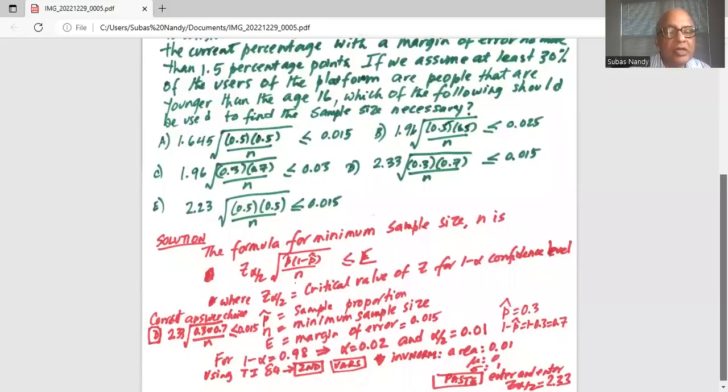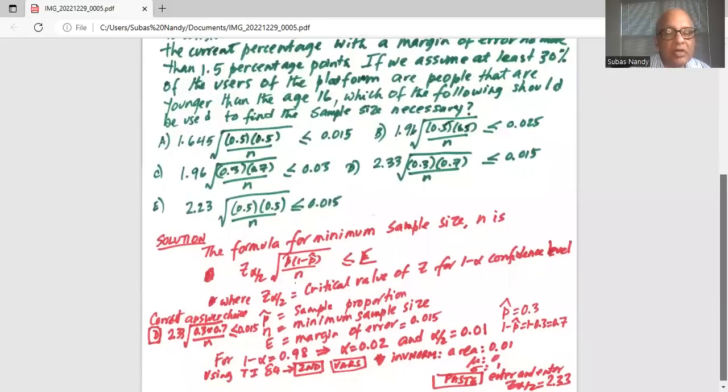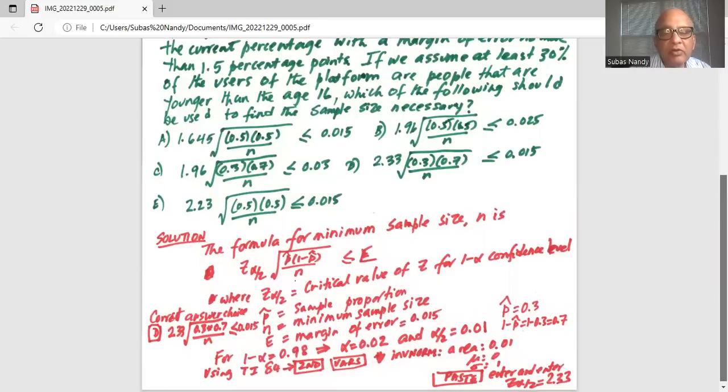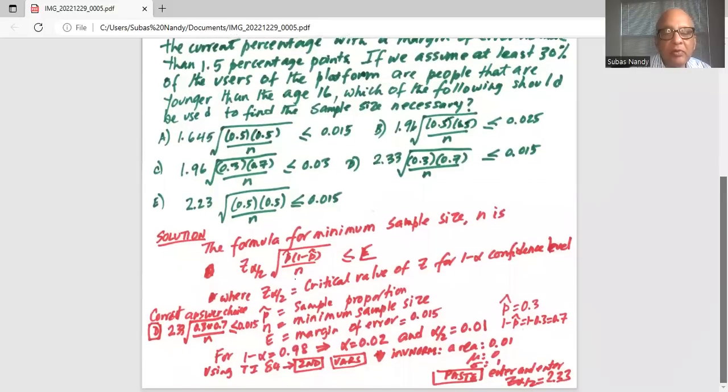Now we need to find out the critical value of z alpha by 2 when 1 minus alpha is 0.98. So alpha itself is 0.02 and alpha by 2 is 0.01. We can use TI 84 calculator and then press the second button, then inverse, then scroll down to inverse norm. To the left of this critical value of z alpha by 2 is 0.01, mu is 0, sigma is 1, paste, enter and enter. Z alpha by 2 is 2.33.